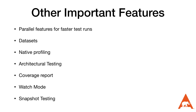These features include being able to run tests in parallel for faster test runs, datasets for running the same tests with different data, native profiling tools to optimize slow running tests, out-of-the-box architectural testing to ensure application rules like making sure we don't commit code with var_dumps, coverage reports directly at the terminal to track code coverage, and plugins such as watch mode and snapshot testing to improve PEST even more.